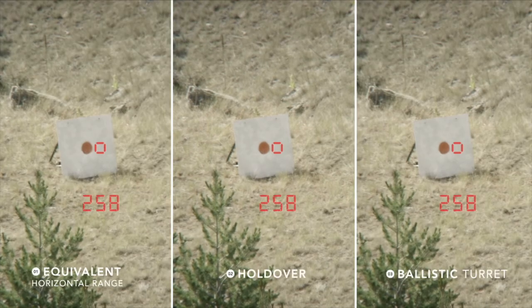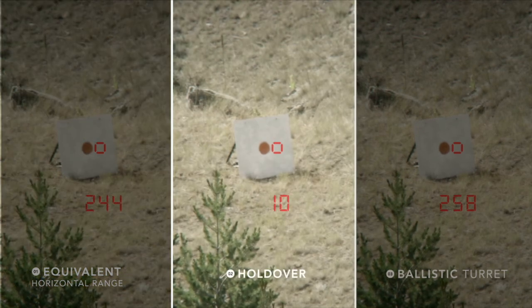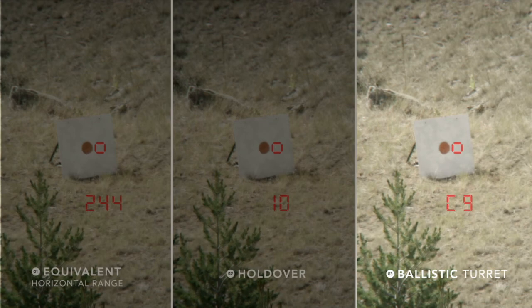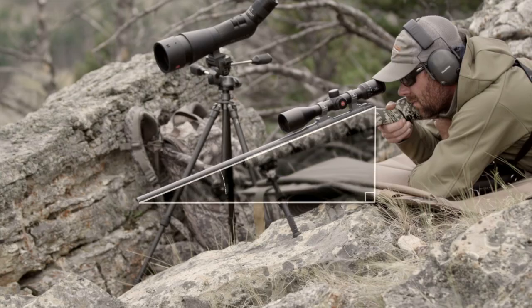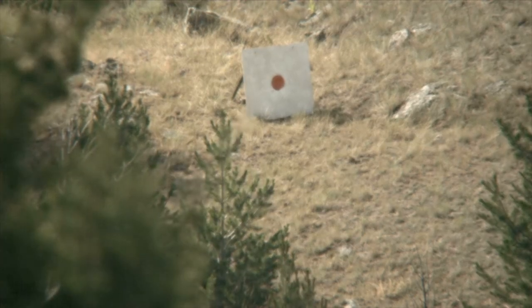The Geovid will always give you your linear distance first, followed by whichever output value you've selected in the menu. All of these outputs take into consideration the angle at which you're shooting, barometric pressure, temperature, and your specific ballistic drop curve.